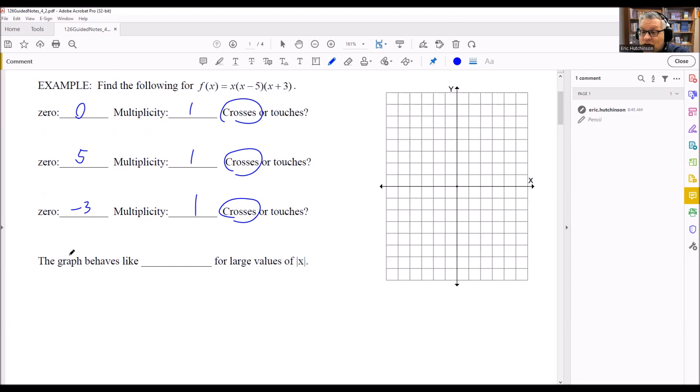This one down here, it says the graph behaves like blank for large values of x. What you're going to do is we're going to look at what the leading term is. In other words, the term that has the highest power, that's going to be the one that we're going to use here.